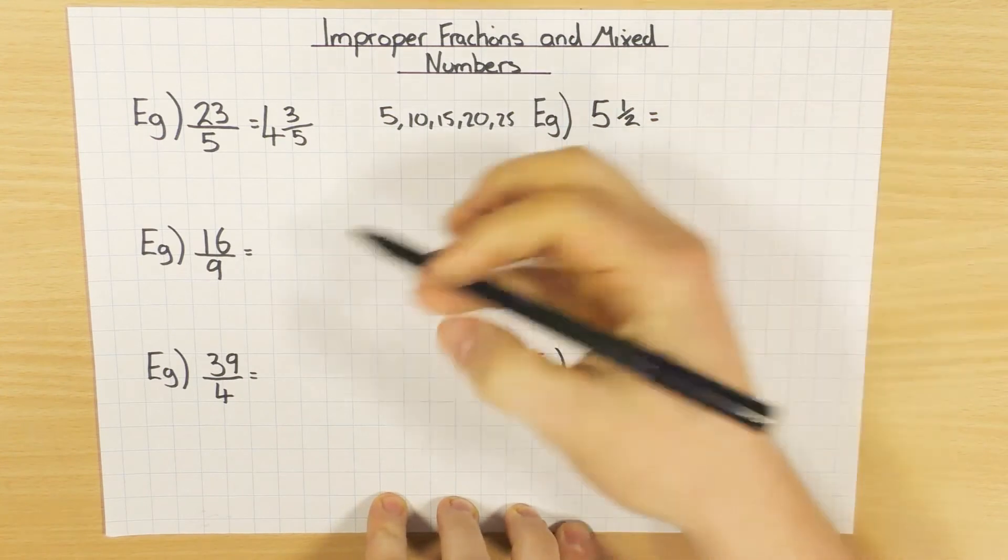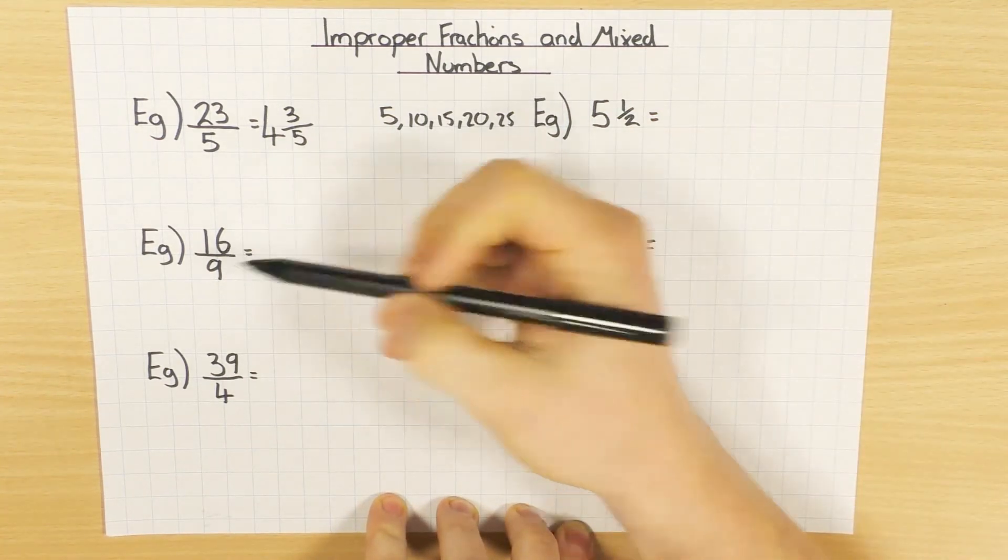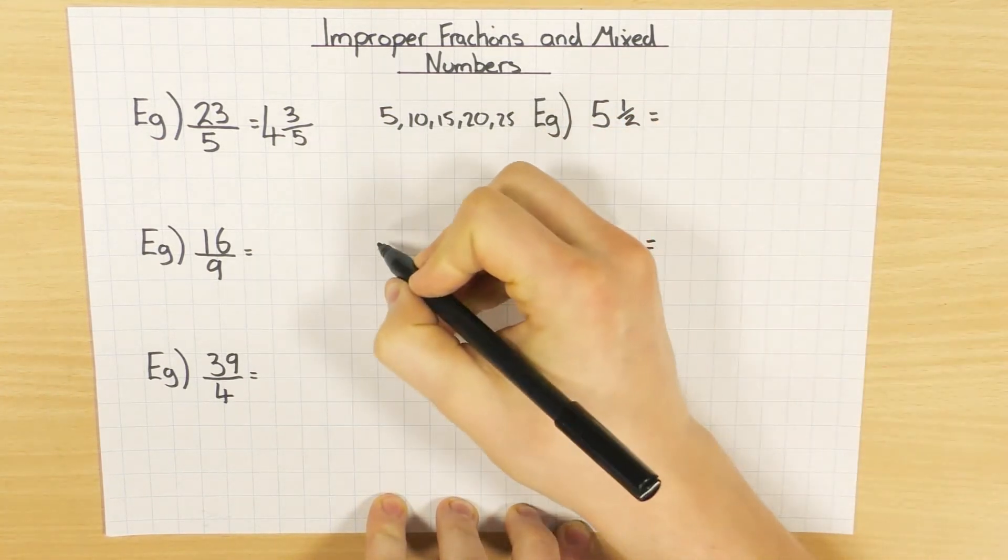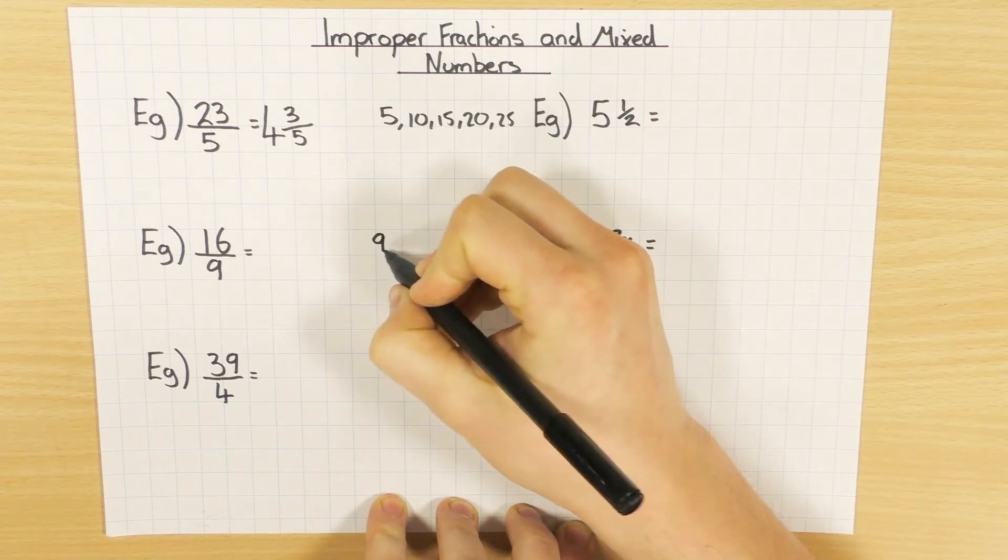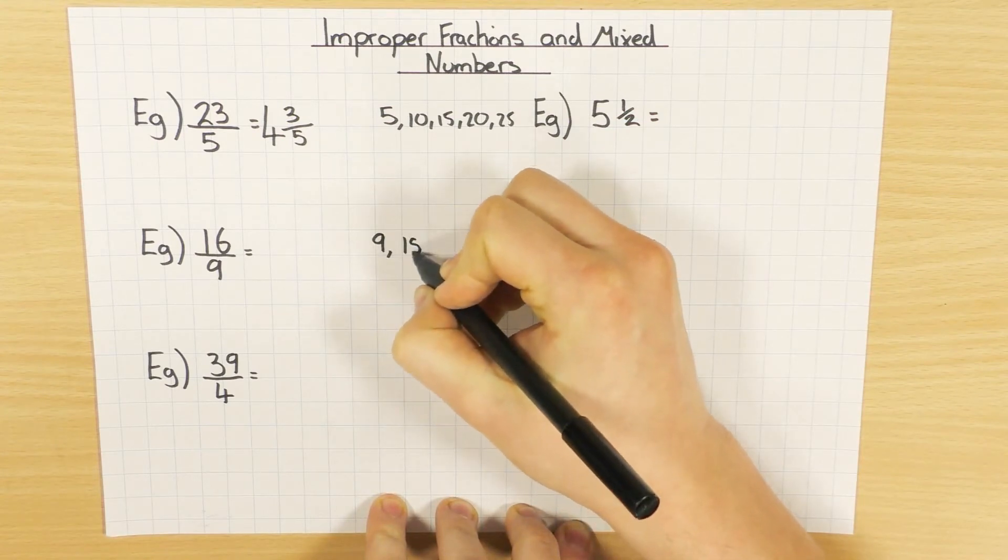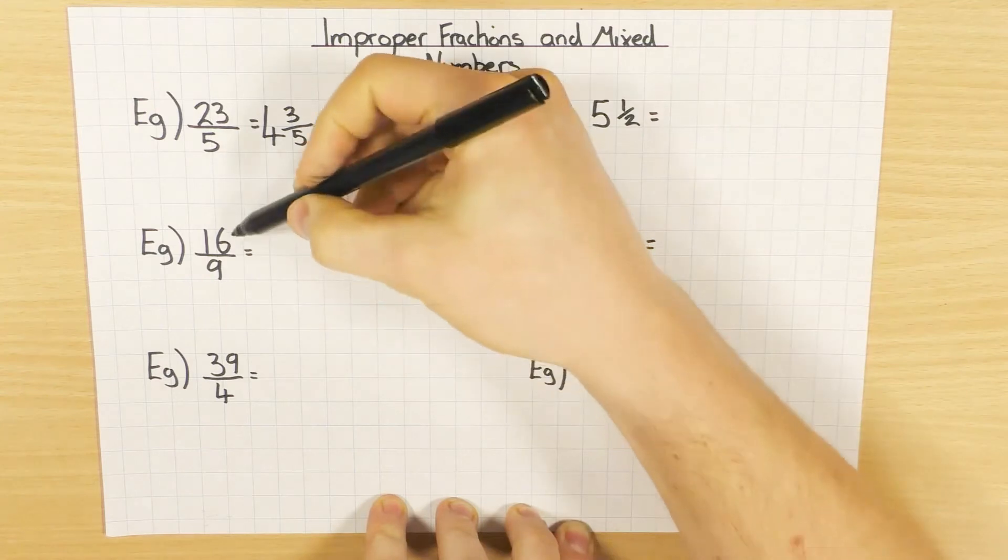Exactly the same thing here. I'll ask myself, how many 9's go into 16? So again, if you're a bit unsure of your times tables, just write them out. Well 9, 18, but I could stop there, because I've only got to go up to 16.